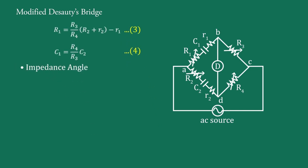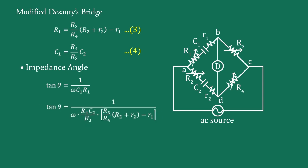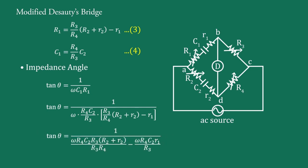For calculation of parameters, we use the formula for RC series connection. For the series R1-C1 connection, tan θ equal to 1/(ωC1R1). Substituting the values of R1 and C1 from equations 3 and 4, we get tan θ equal to 1 upon ω · (R4C2/R3) · (R3/R4) · (R2 + r2) minus ωR4C2·r1/R3.